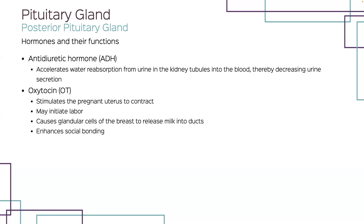Hyposecretion of ADH causes diabetes insipidus, a condition in which large volumes of urine are formed. Oxytocin is secreted at high levels by a woman's body before and after she delivers a baby. It stimulates contraction of the smooth muscle of the pregnant uterus and is believed to initiate and maintain labor. Oxytocin also affects the glandular cells of the breast to release milk into the ducts from which a baby can easily obtain it by sucking. It is also thought to enhance social bonding, a function helpful in supporting mother-infant bonding.